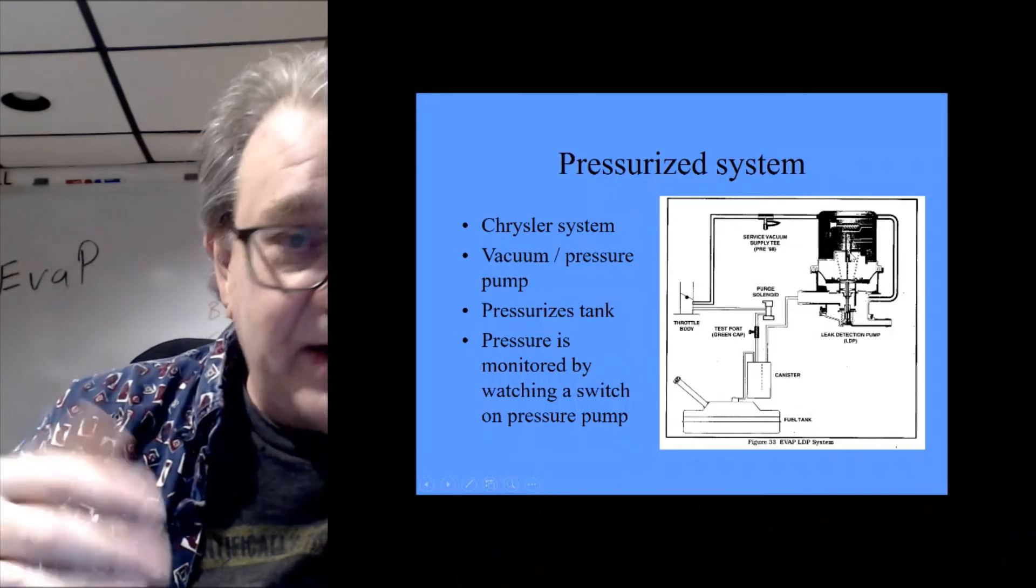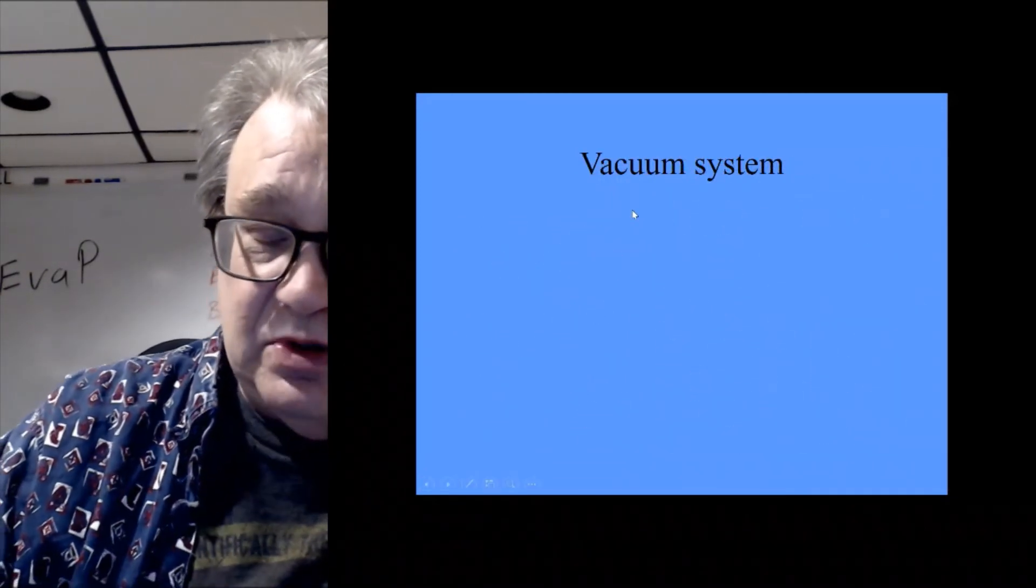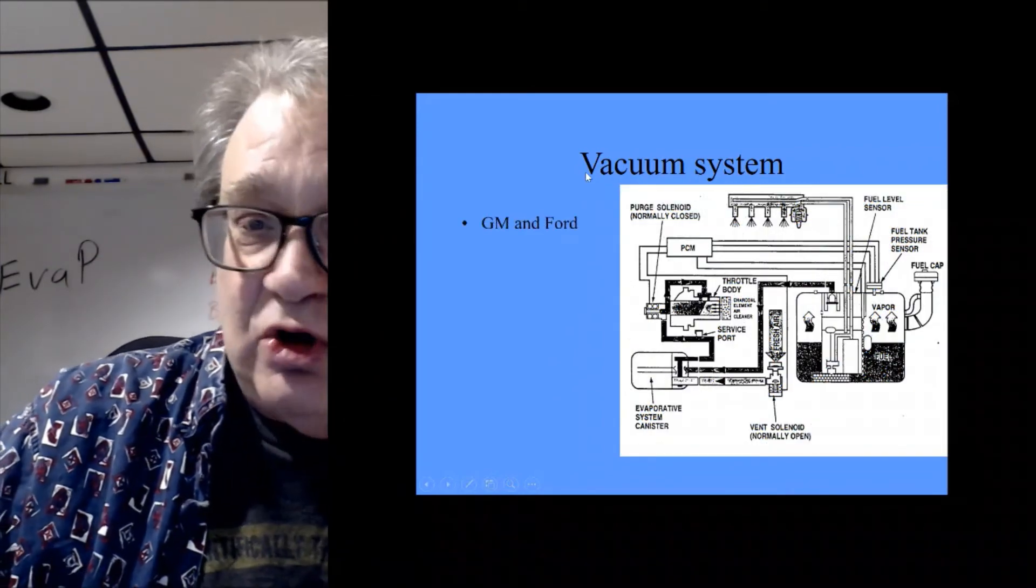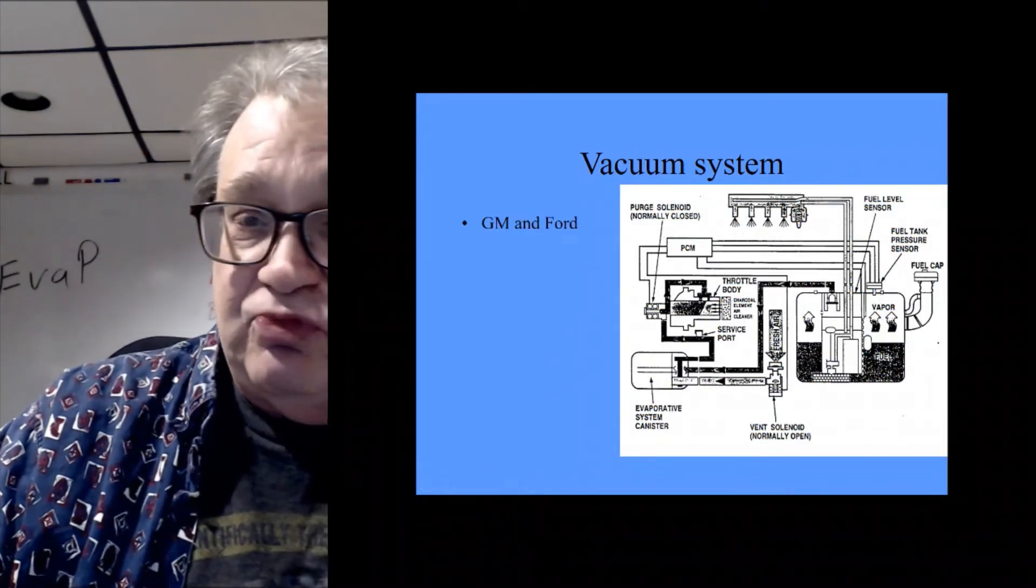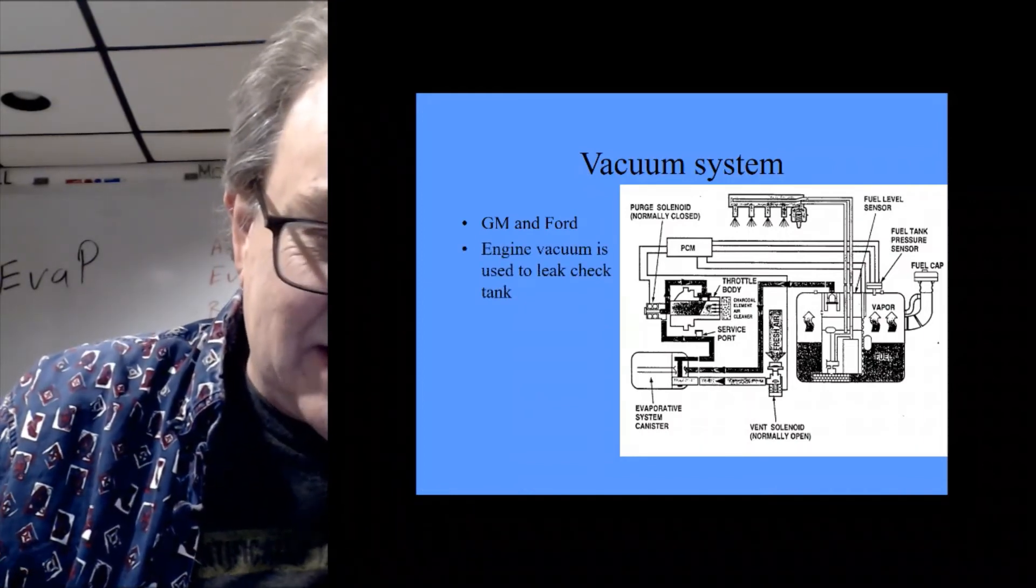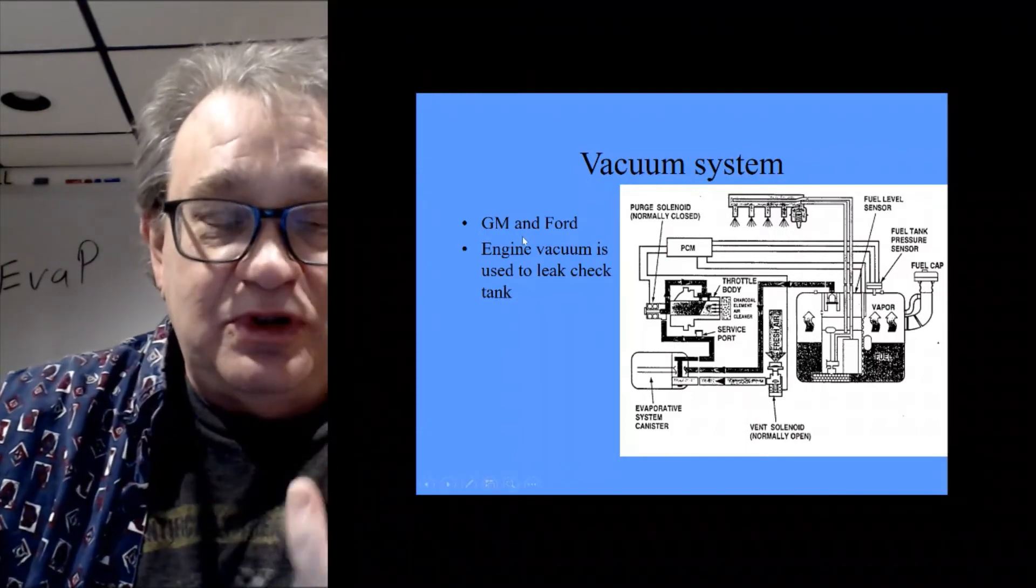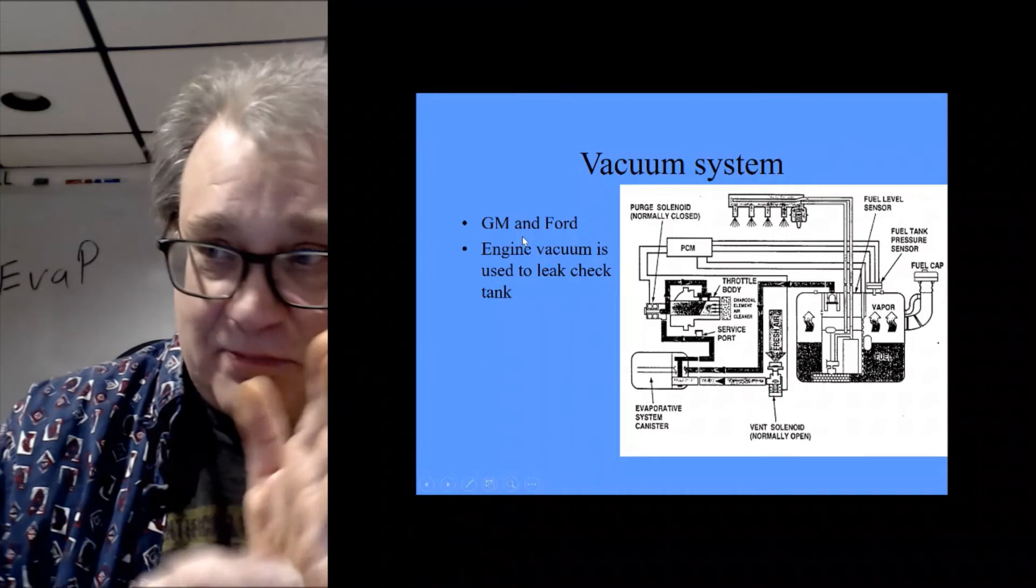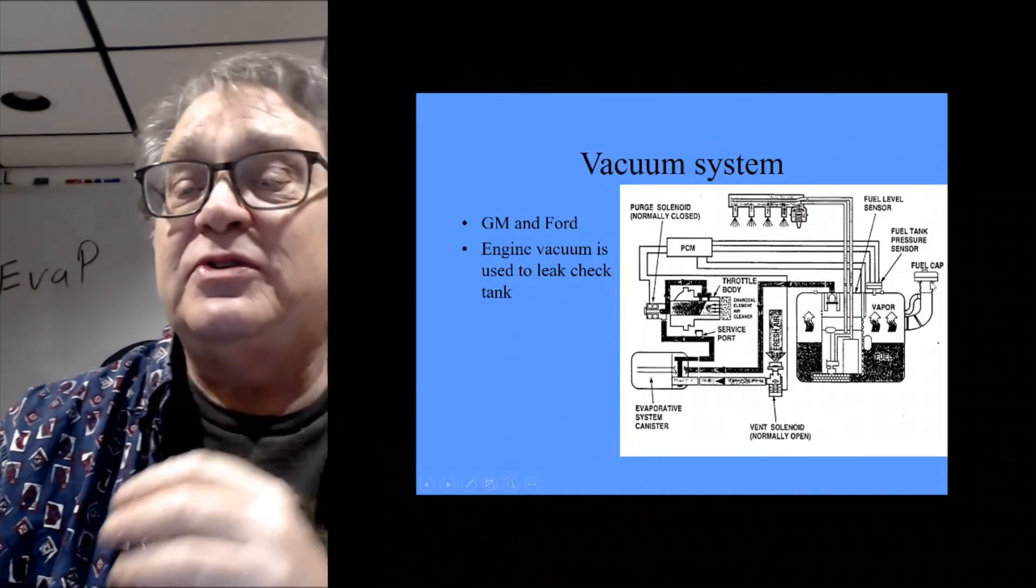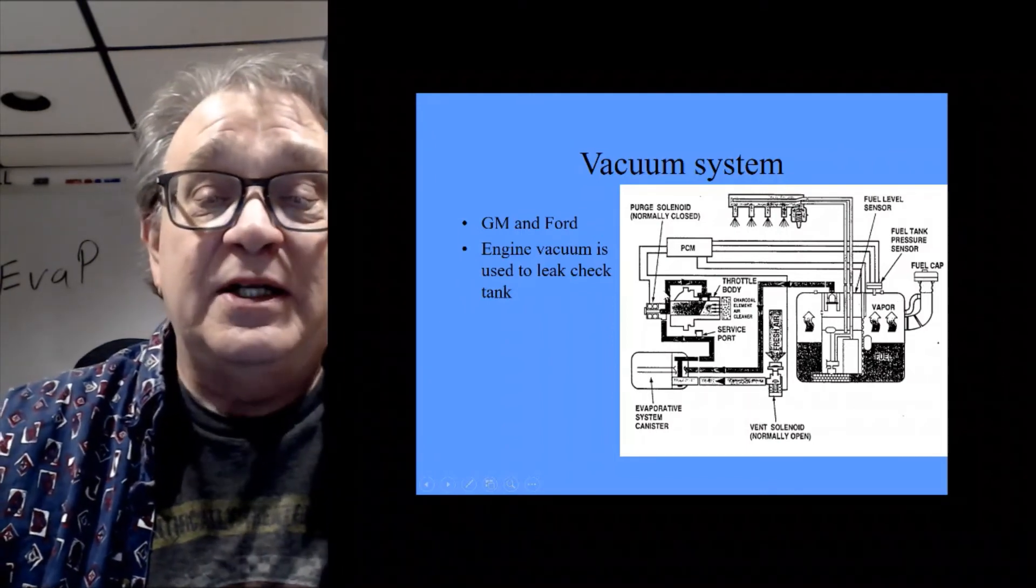Vacuum pressure, this is by far the most common. GM, Ford, bunch of other ones use this, I think it's Hondas. Anyways, so they use vacuum to check for a leak. So instead of being a positive pressure, this is a negative pressure. So basically all they do is they turn off, here is my vent cell and here is my purge cell, and I is hooked up to manifold vacuum.